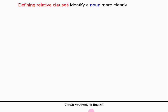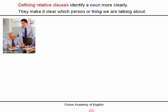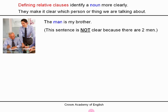Defining relative clauses identify a noun more clearly. They make it clear which person or thing we are talking about. So for example, if we look at this photograph, I can say: the man is my brother. But there is a problem with this sentence because it is not clear — there are two men in the photograph. So which man is my brother? We do not know.